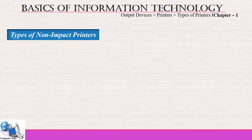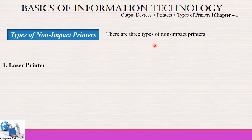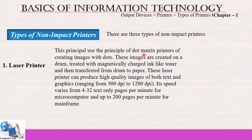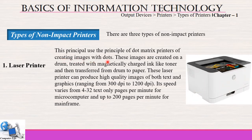Now we will discuss the types of non-impact printers. There are three types. The first one is laser printer. Laser printer uses the principle of dot matrix printer of creating images with dots. These images are created on a drum treated with magnetically charged ink like toner and then transferred from drum to paper. Laser printers can produce high quality images of both text and graphics. Speed varies from 4 to 32 text-only pages per minute for microcomputers and up to 200 pages per minute for mainframes.